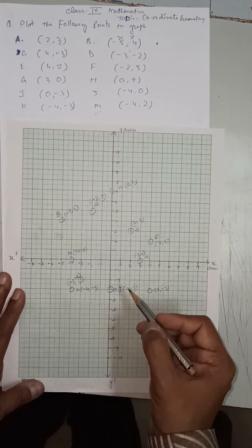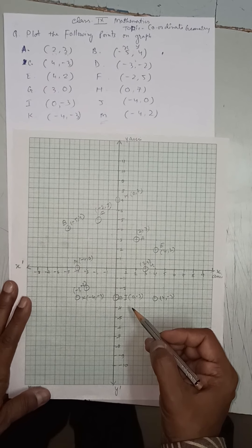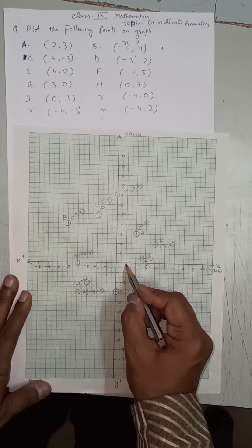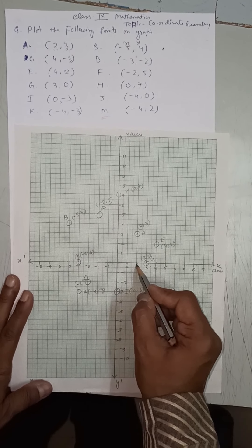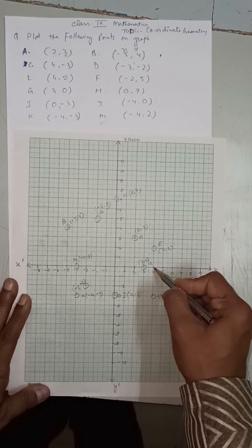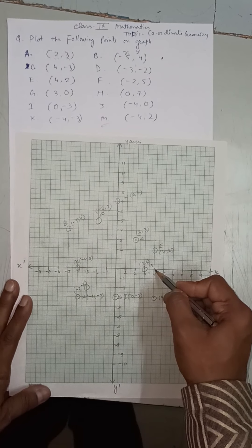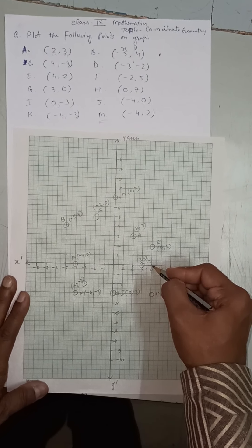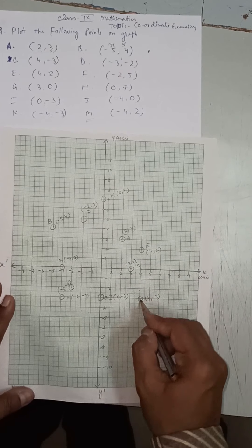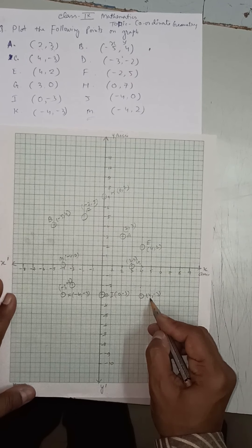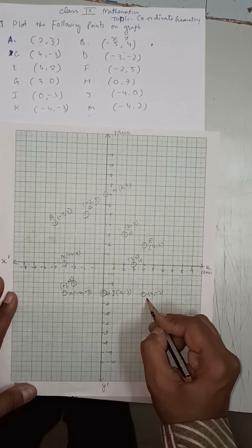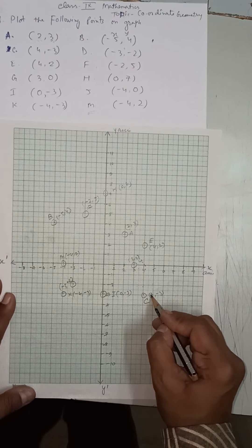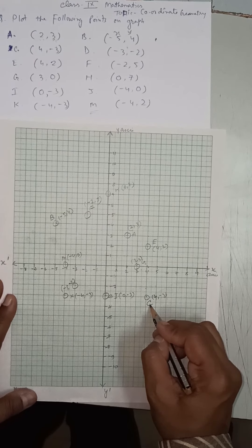Point C is (4, −3). 4 means positive x: 1, 2, 3, 4. Minus 3 means y is negative, so we go downward 1, 2, 3. So the point C is at (4, −3) and we mark it accordingly.